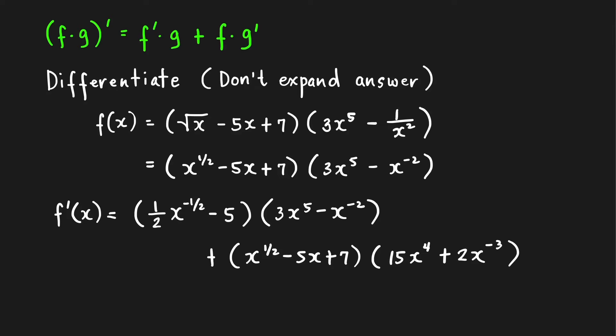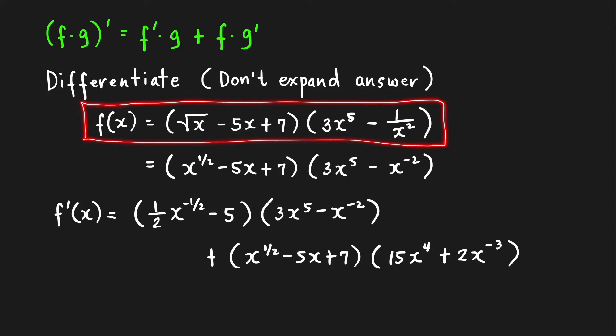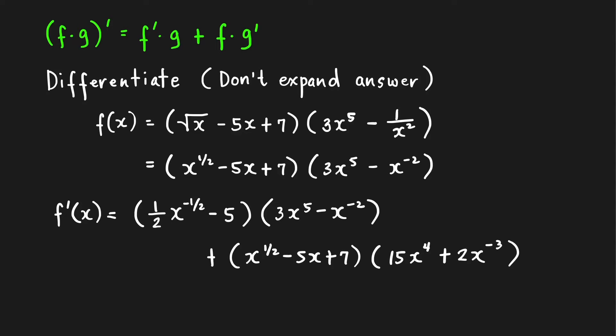Next, suppose we want to differentiate this product and we're asked not to expand our answer. To apply the power rule immediately, it's better to write this into rational exponents. So √x is x^(1/2) and 1/x² is x^(−2), since moving x² to the numerator changes the sign of the power.